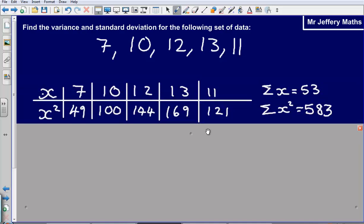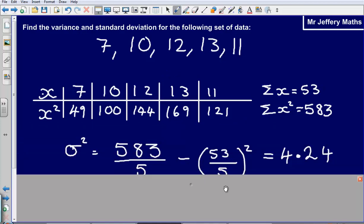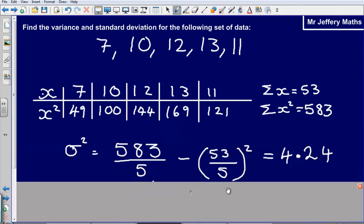So what we should have done is we should have first of all set up a little table like I've done. Put our numbers in it. Calculated the square of each of the values. Summed each of these up. Then simply input these into our formula.